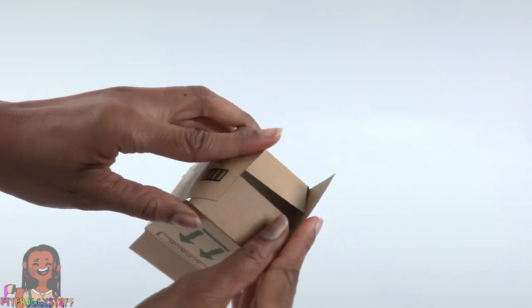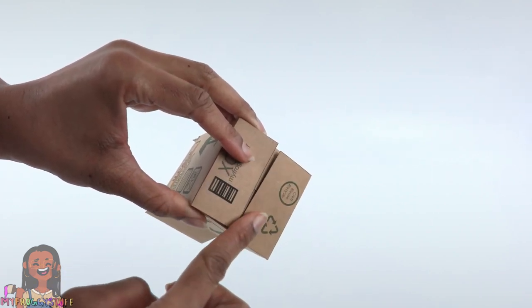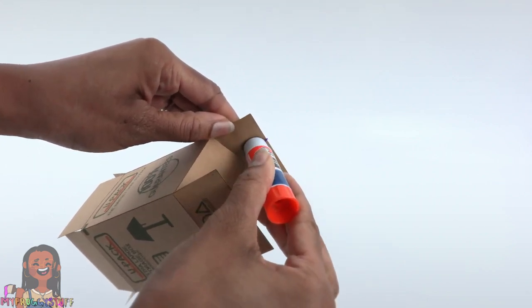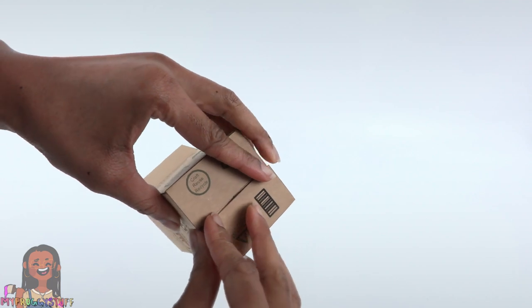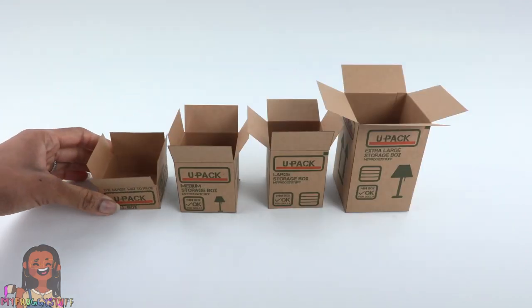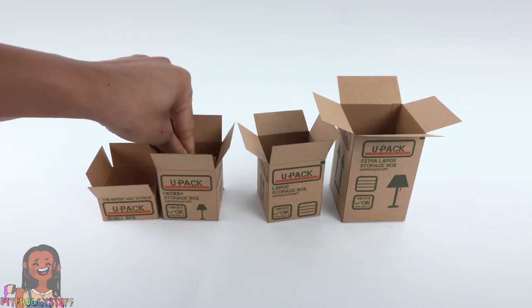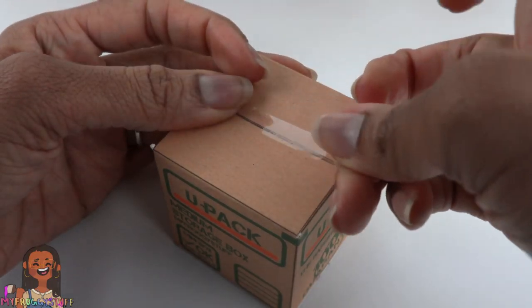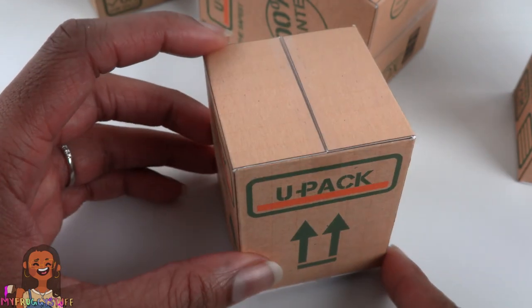Fold in the bottom tabs. Two of the tabs are plain and the other two have images on them. I want these to be facing out. Apply glue to the inside, then fold them over and hold in place to make our storage boxes that we can fill with doll stuff and tape closed.